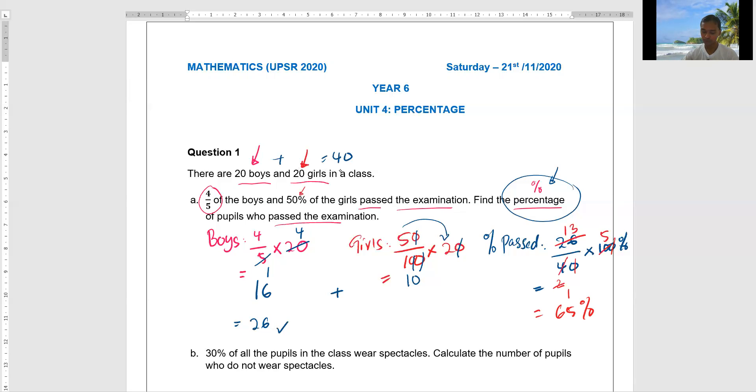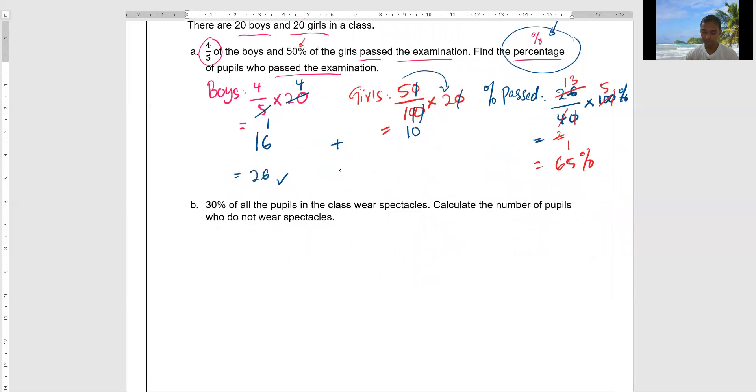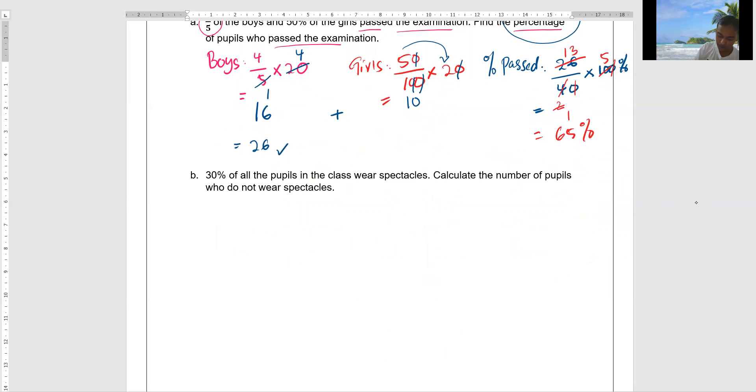Let's move to question number two. 30 percent of the pupils in the classroom wear spectacles. The second one is: calculate the number of pupils who do not wear spectacles.